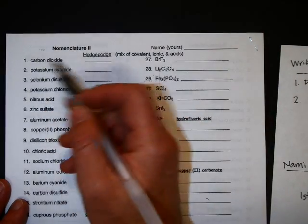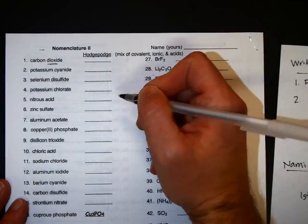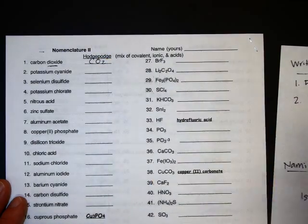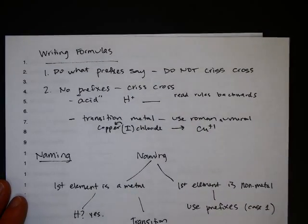And so like something like this, carbon dioxide, see the prefixes there, means I'm not gonna think about it too much, I'm just gonna write one carbon and two oxygens. Don't crisscross, do anything crazy.